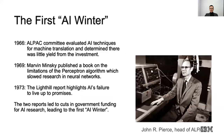The first AI winter was in the 1960s and 1970s. In 1966, the ALPAC committee evaluated machine translation and determined there was little yield from the investment. In 1969, Marvin Minsky published a book on the limitations of the perceptron algorithm, which slowed research in neural networks.